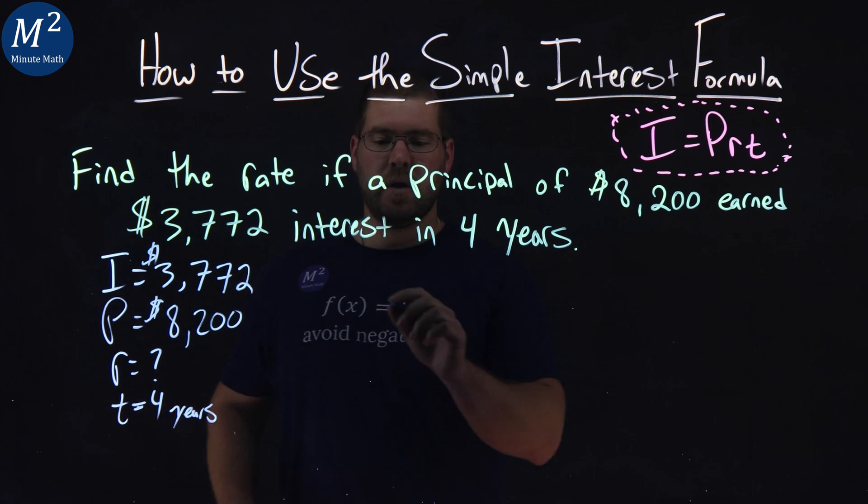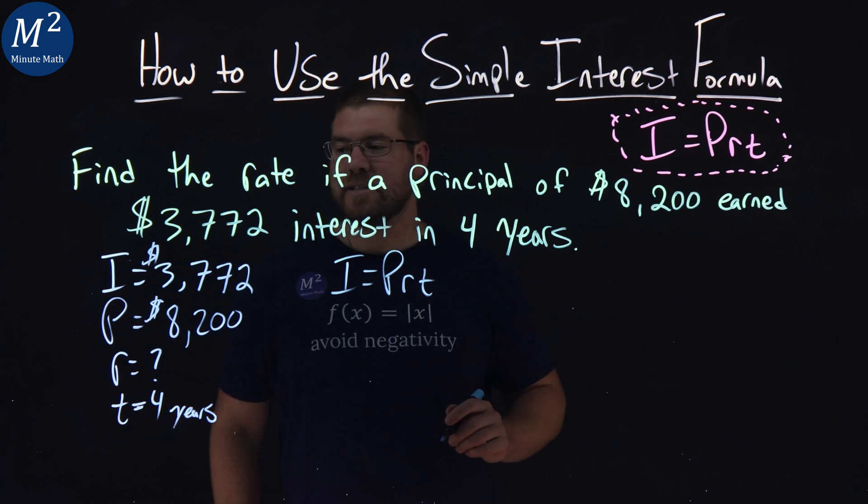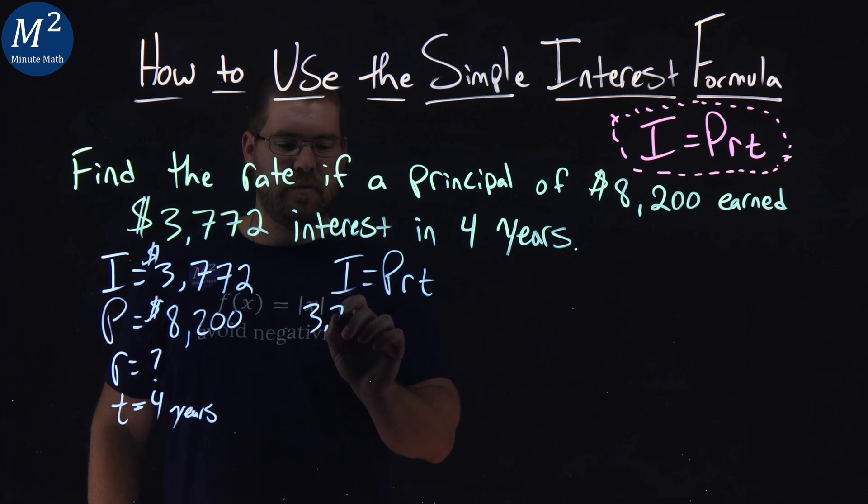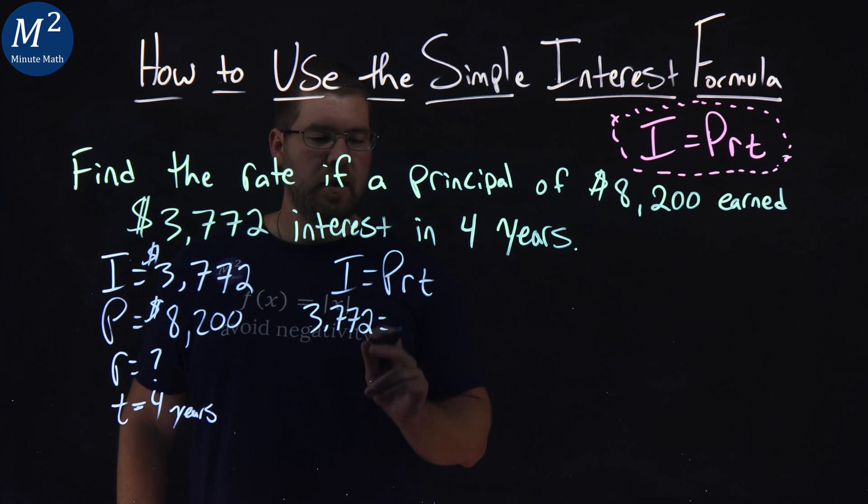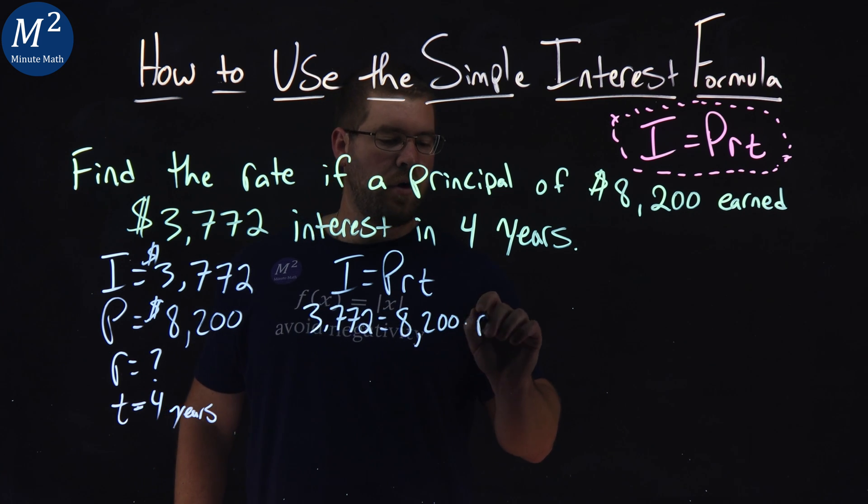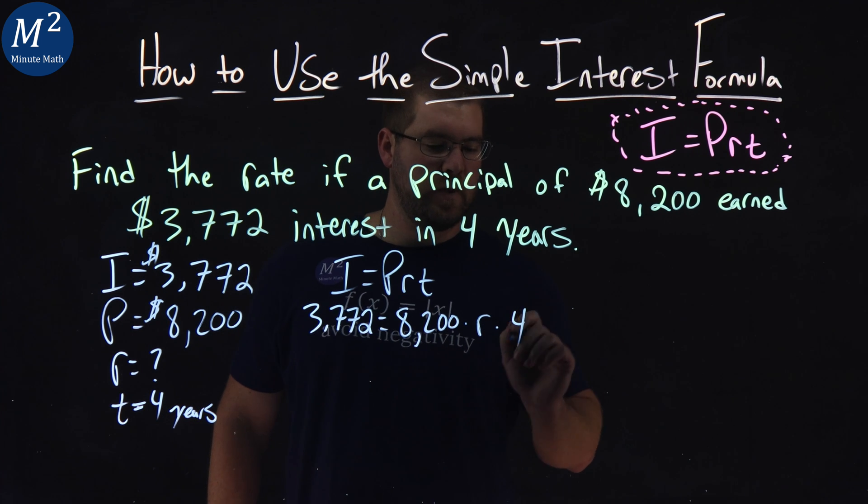So what we're going to do is use our formula, I equals PRT, and we're going to substitute what we know. I, $3,772, equals our principal amount, $8,200 times R, which we don't know, our interest rate, times four years.